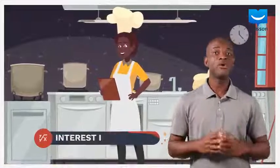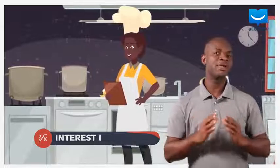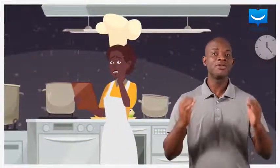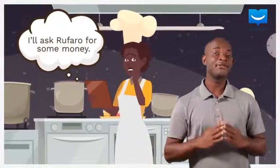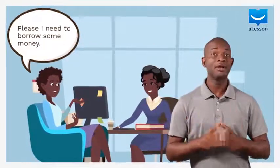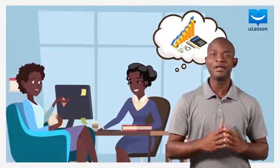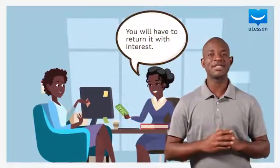Minona is a pastry chef who was just awarded a contract by a non-governmental organization in Zimbabwe. But she needed some money to deliver the items ordered for. She went to meet her friend Rufaro to borrow some money. Whereas Rufaro, who is an astute businesswoman, needed to invest the money, but she chose to lend Minona with an interest.